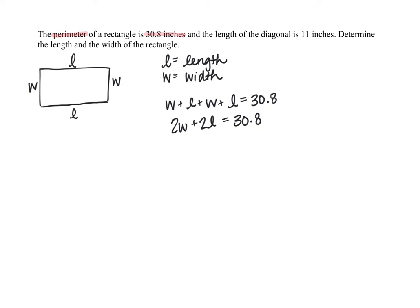And since we have two variables, we therefore want to try to write a second equation. If there's three variables, we would write a third equation. In this case, two variables, we're searching for two equations. Keep reading, and it says that the length of the diagonal is 11 inches. So I need to draw that in. The length of this diagonal from corner to corner is 11 inches. And what that creates for us is a nice right triangle in here. And all three sides of our right triangle are labeled.